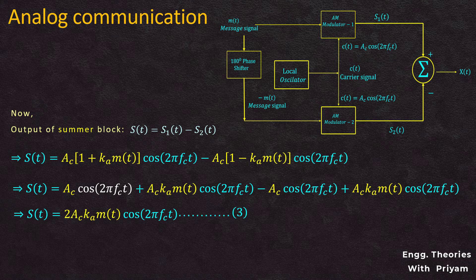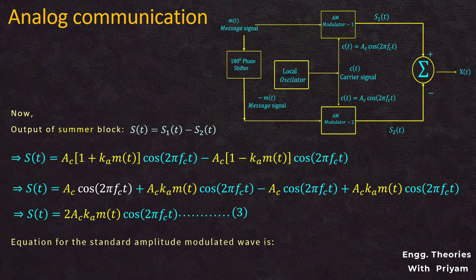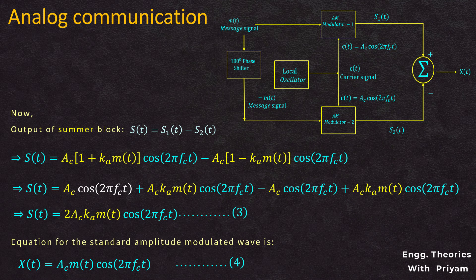This can be further simplified as s(t) = 2·Ac·ka·m(t)·cos(2π·fc·t), identified as Equation 3. The standard DSBSC modulated signal is x(t) = Ac·m(t)·cos(2π·fc·t), identified as Equation 4. Comparing the two equations, the expression s(t) of Equation 3 represents the DSBSC signal with a scaling factor of 2·ka. Hence, the balanced modulator produces a DSBSC modulated signal.